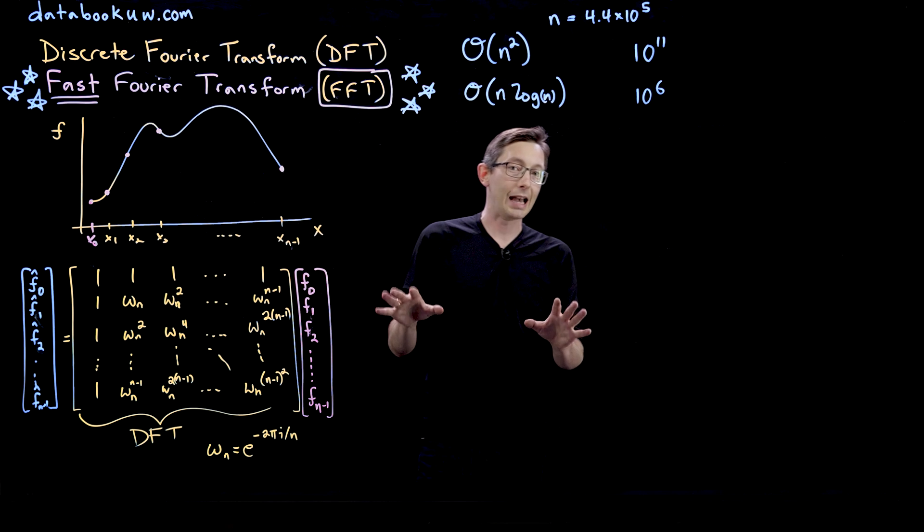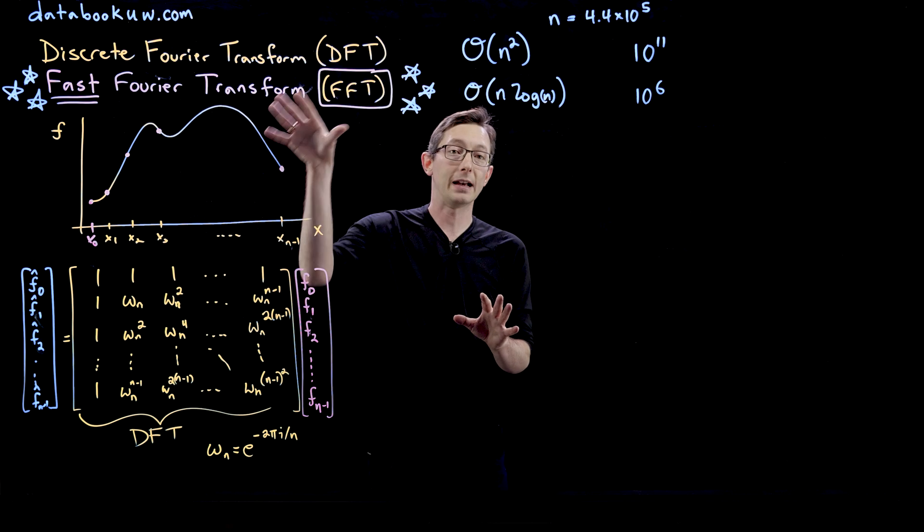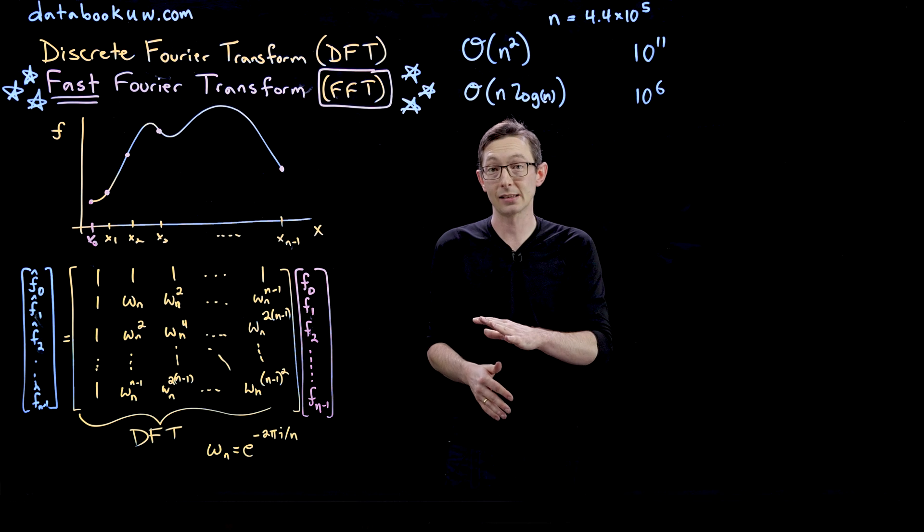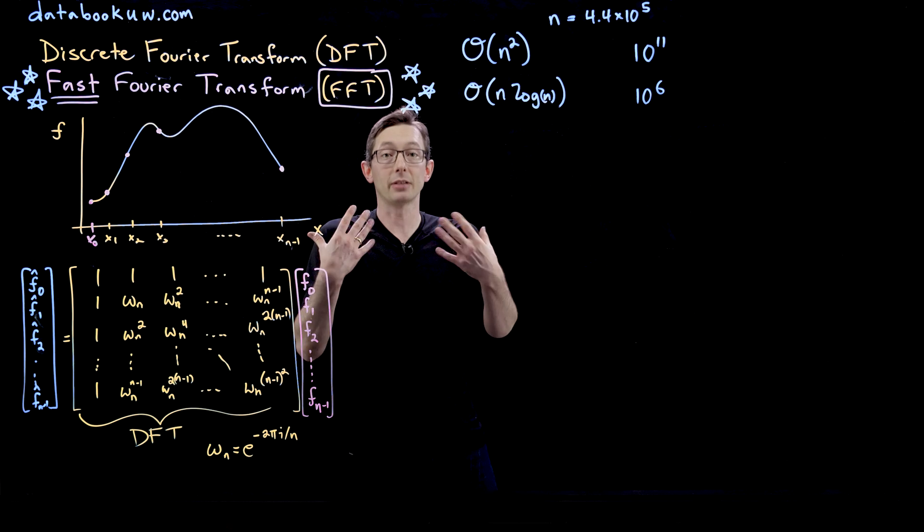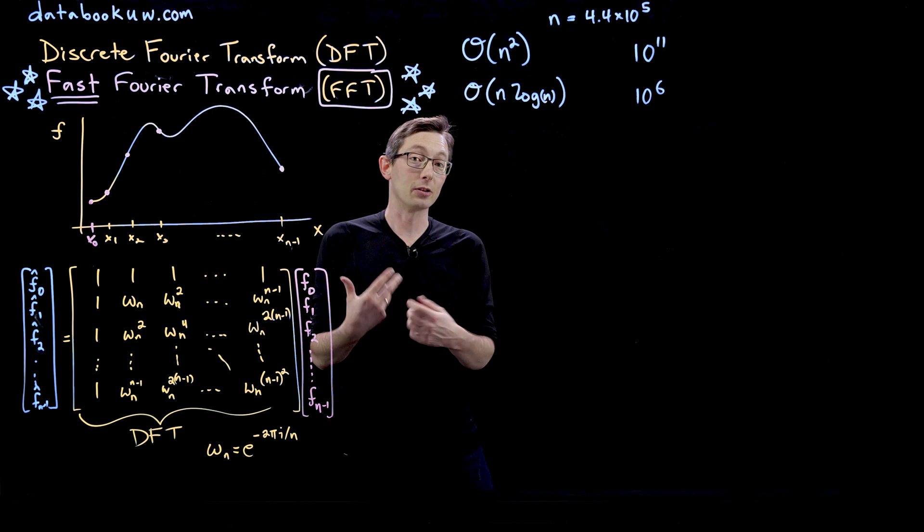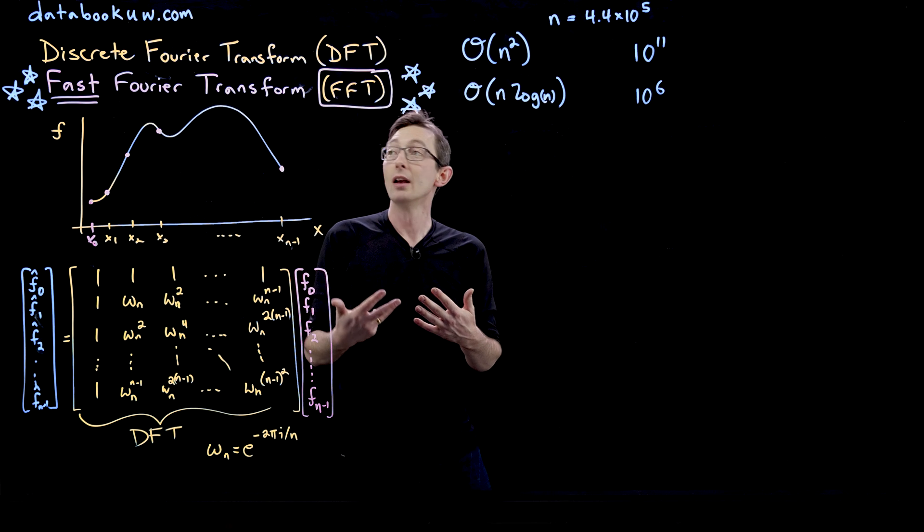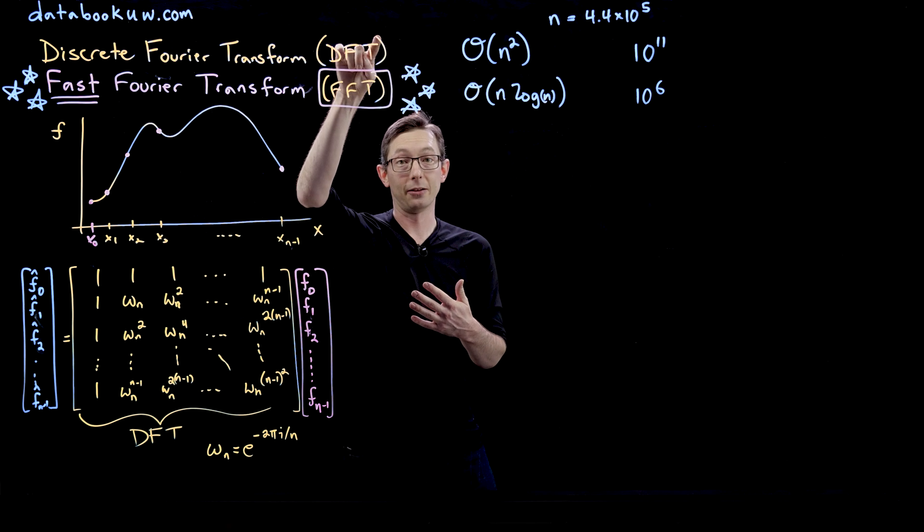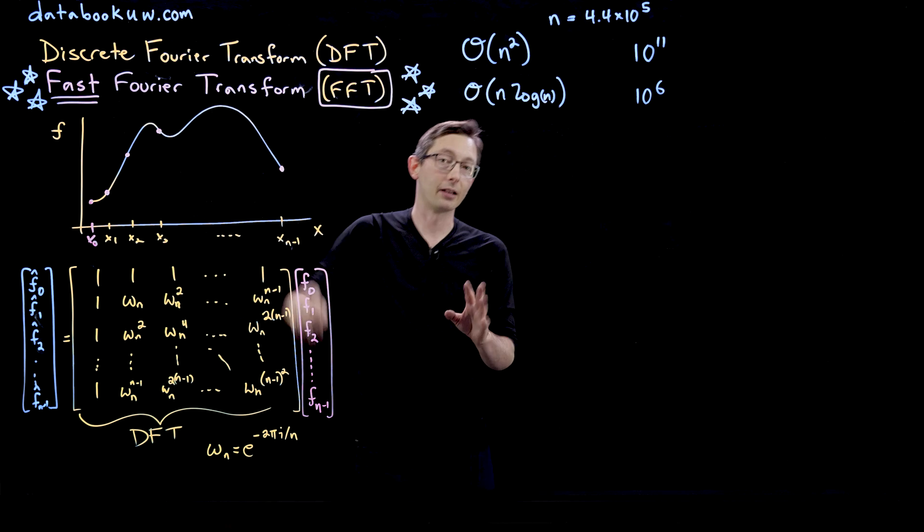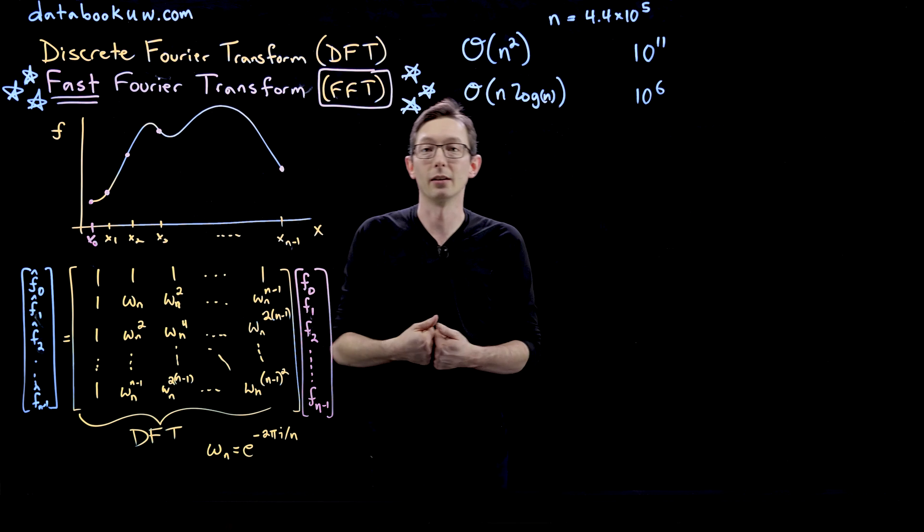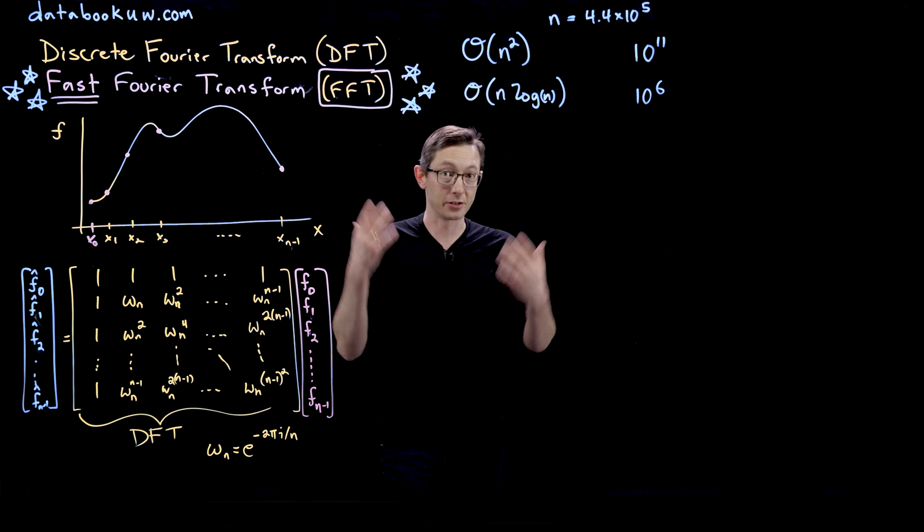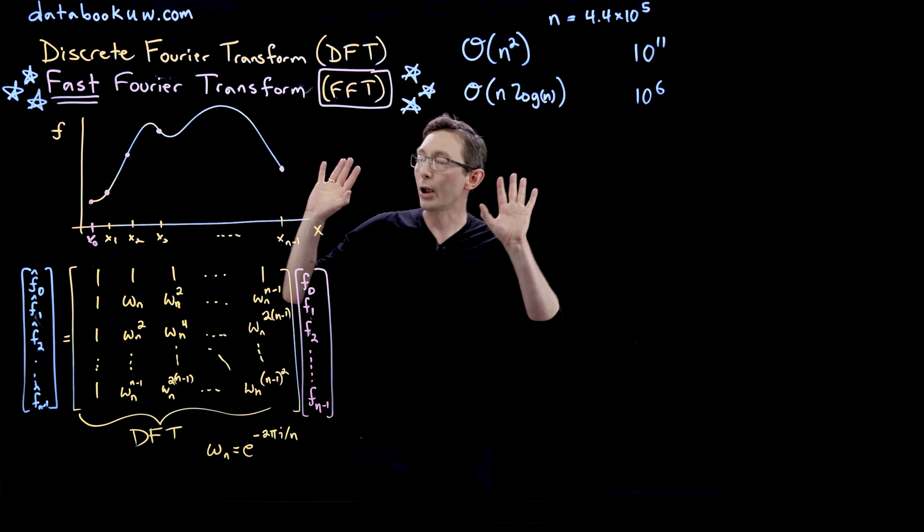Interestingly, Gauss actually invented a form of the fast Fourier transform hundreds of years ago around 1806, because he was doing mental calculations that required a Fourier transform, and he realized that these were too slow or too cumbersome with the DFT algorithm. And so he invented the FFT, but he didn't think it was worth publishing. There weren't computers at the time, so it was just a mental math algorithm for him.